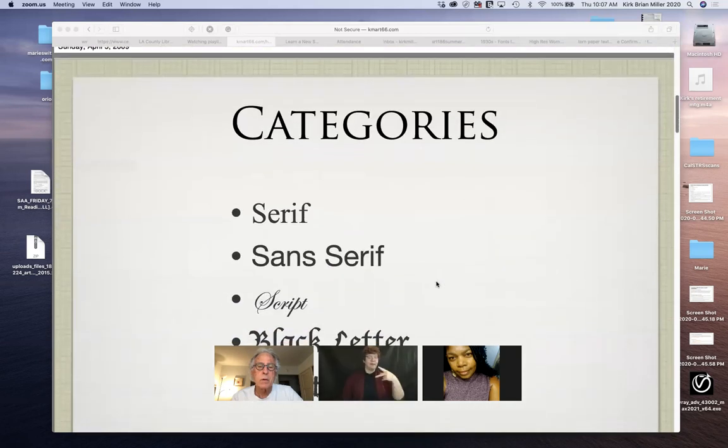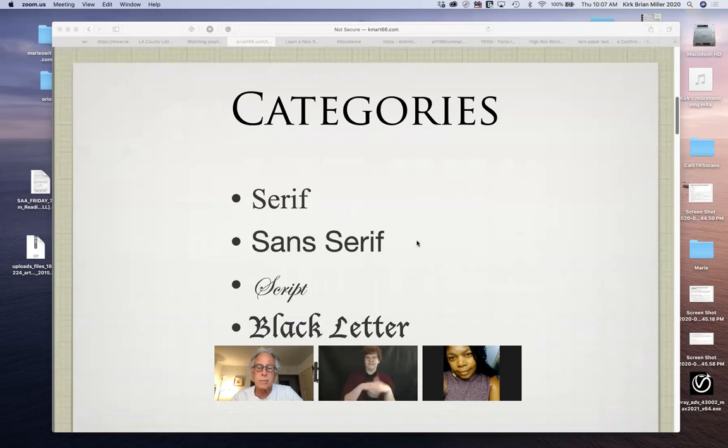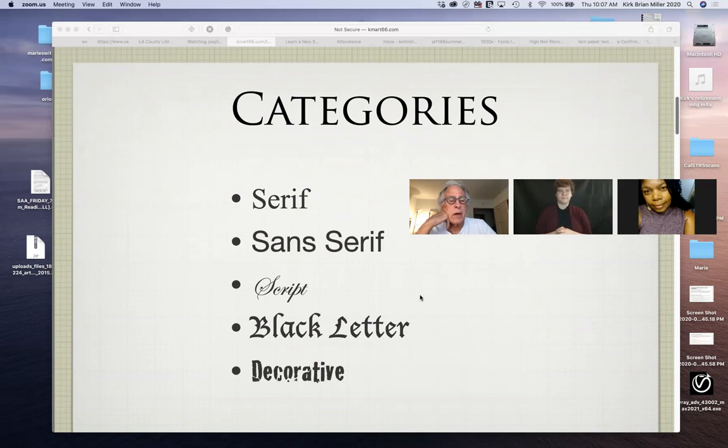So I'm going to go to categories here. Anyway there are basically five separate categories of type. There's the serif which is where Roman falls into that category. You can tell that by these little extensions that come from the end of many of the letter forms. They do actually have a function. They're not there purely for aesthetics. They actually enhance the readability of type. If you look at most textbooks or newspapers and that sort of thing, they do use serif typefaces, especially when the type gets fairly small. For whatever reason it's easier to read.